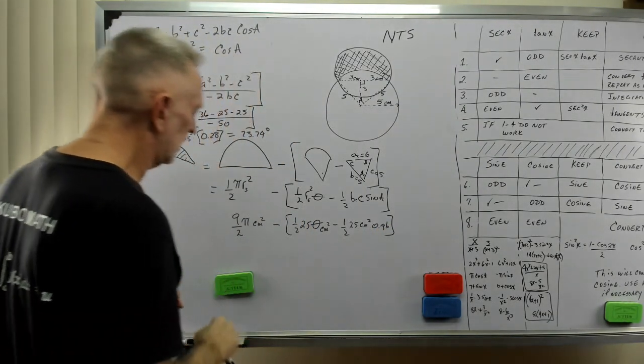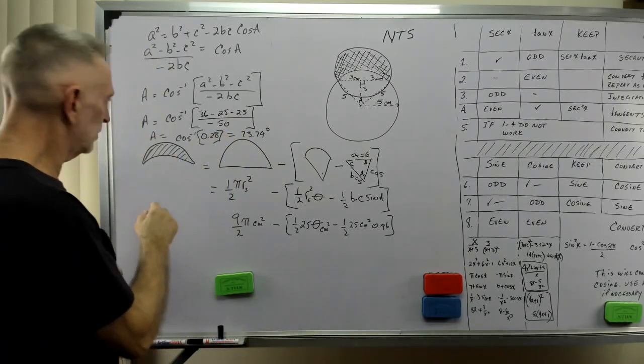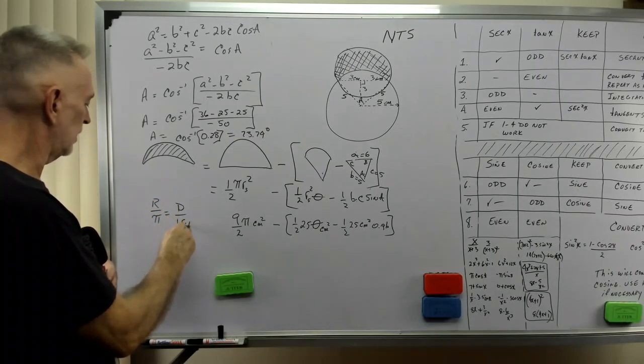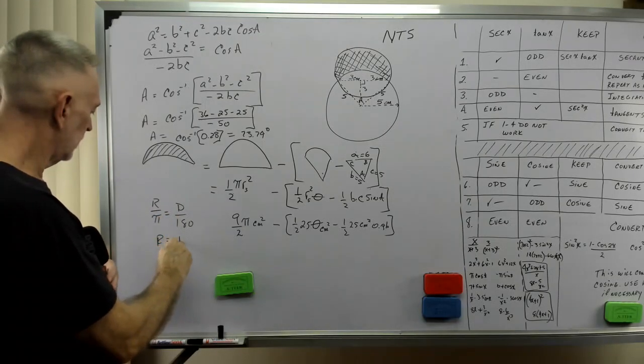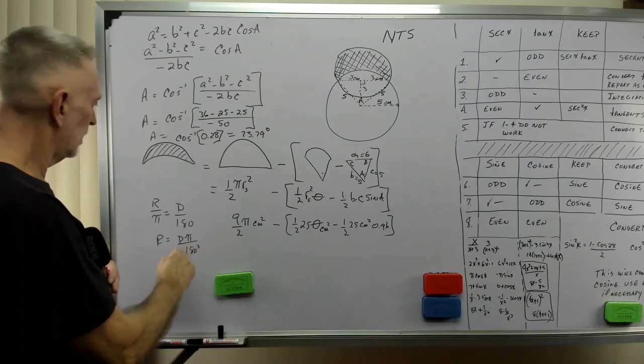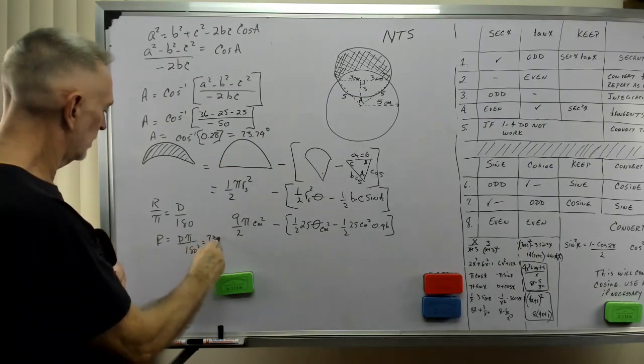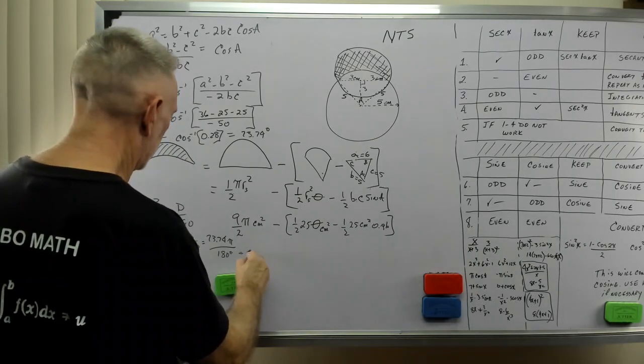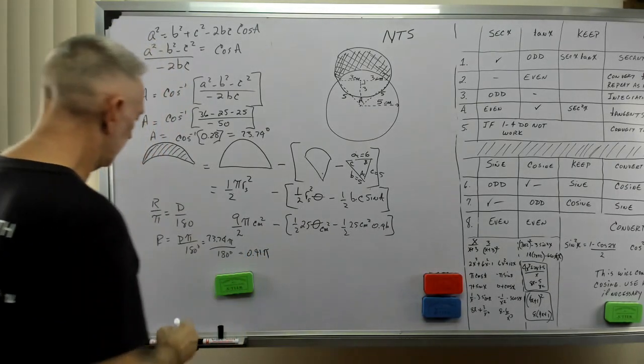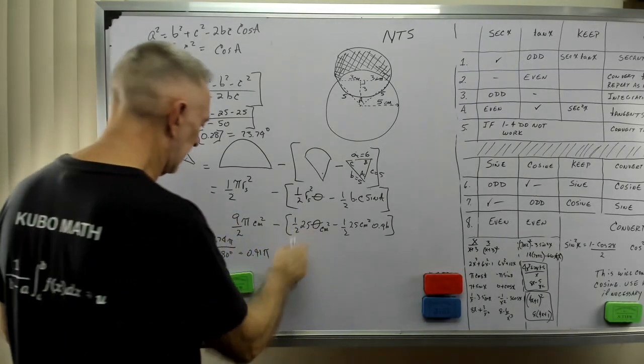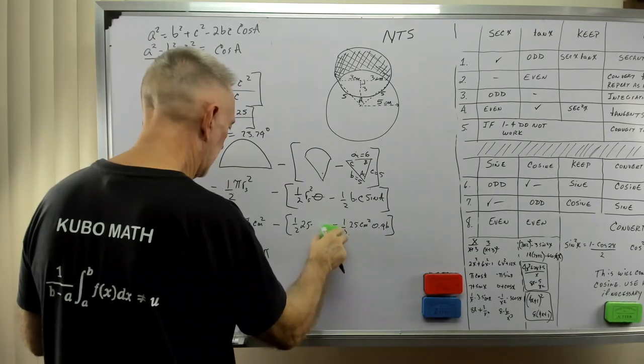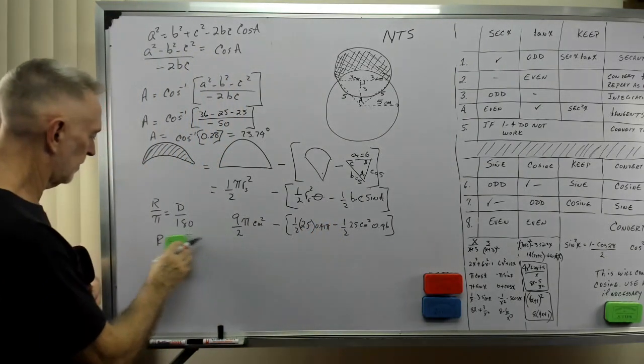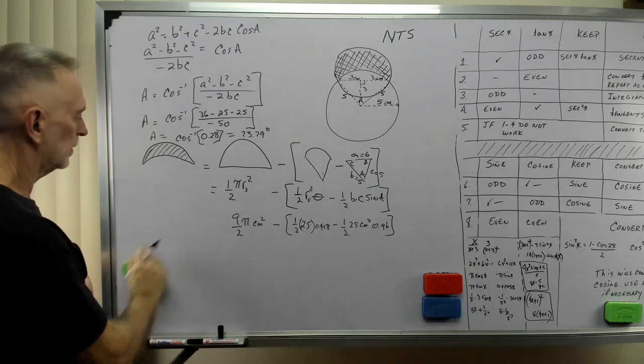Now we've got to fill in the blanks for this guy, for theta. So if I have 73.74 degrees, I know that radians is to pi as degrees are to 180. So radians equals degrees times pi over 180. So 73.74 pi divided by 180 degrees equals so many radians, and that's 0.41 pi. All right, so we can take this number, theta now is 0.41 pi.